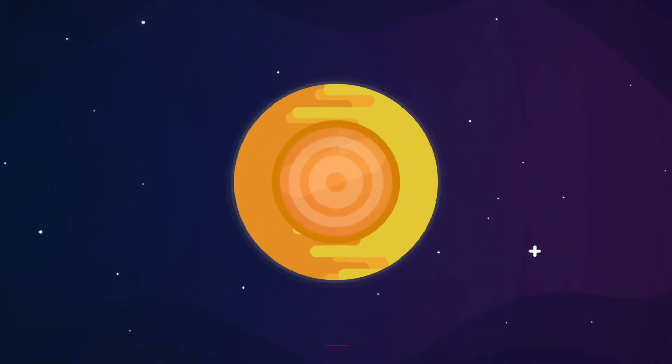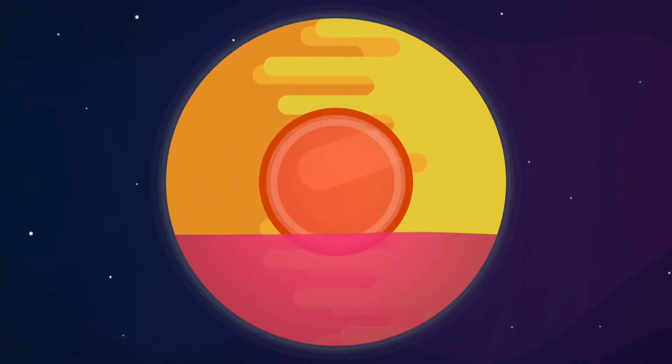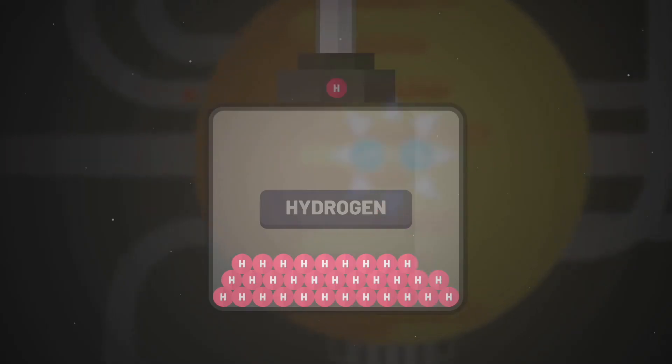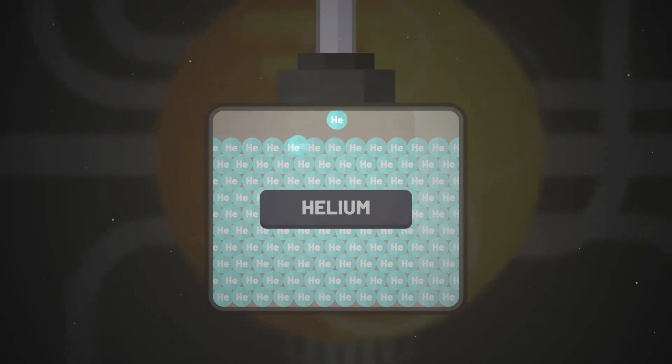But eventually, the sun's supply of hydrogen will run out, allowing its core to shrink and become even more hot and dense. At this point, with no more hydrogen to fuse, the sun will begin fusing helium atoms together, forming even heavier atoms like carbon and oxygen.